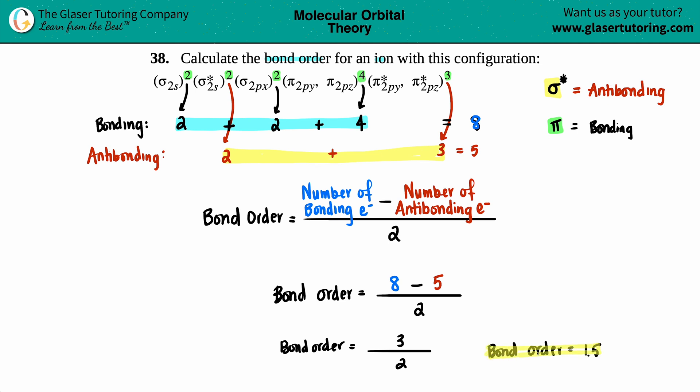1.5, three out of two or three over two—tomato, tomato—but that would be your answer. It's pretty easy once you just tally up all of your electrons and just put them in the formula, and that's it. It didn't matter that this was an ion; it all just came down to what electron configuration they gave us for the molecular orbital, and then we just did the math. I hope this helped.